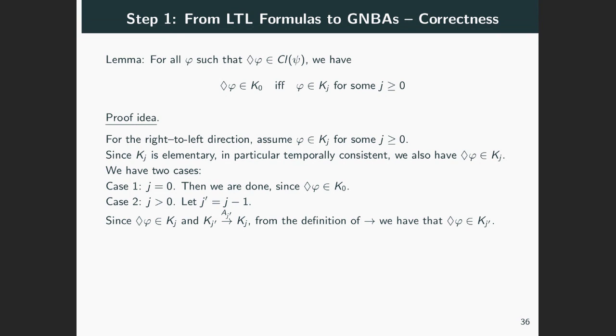Indeed, remember that the transition relation of our automaton incorporates the idea of consistent transitions between the current and the next scenarios. In our case here, say Kⱼ' is the current and Kⱼ is the next scenario. Then eventually φ could not appear in Kⱼ out of the blue but must have already been in Kⱼ'. This is in the nature of eventually. So what we did is argued that from eventually φ in Kⱼ, we obtained that eventually φ is also in Kⱼ' for j' the predecessor of j.